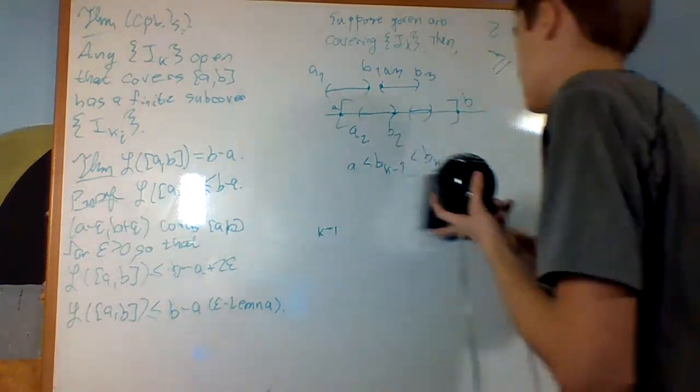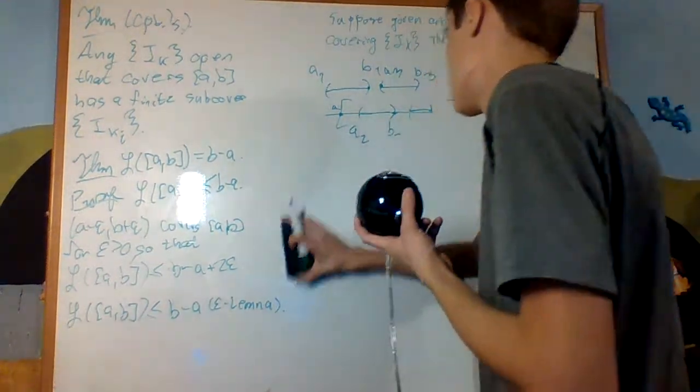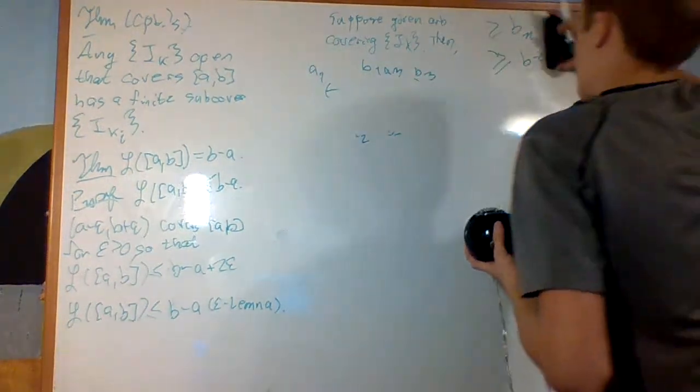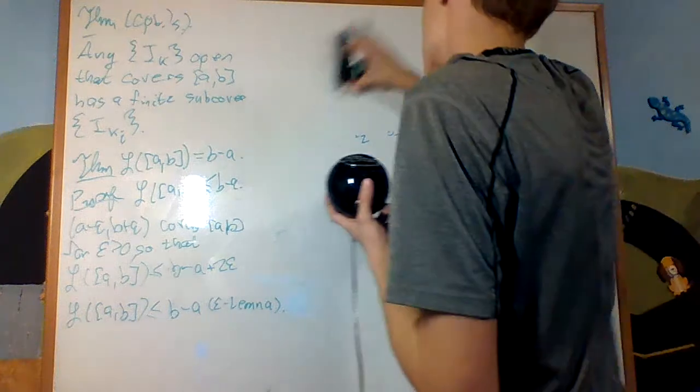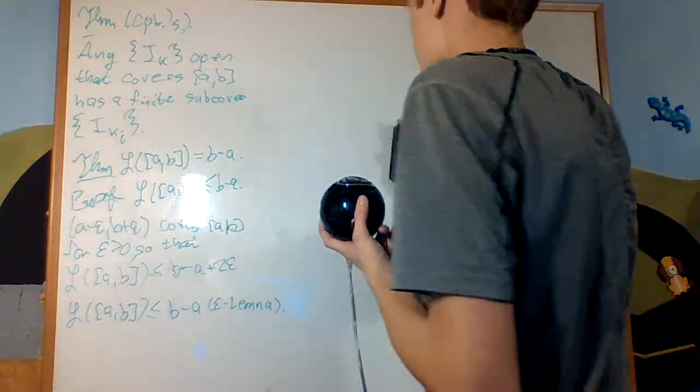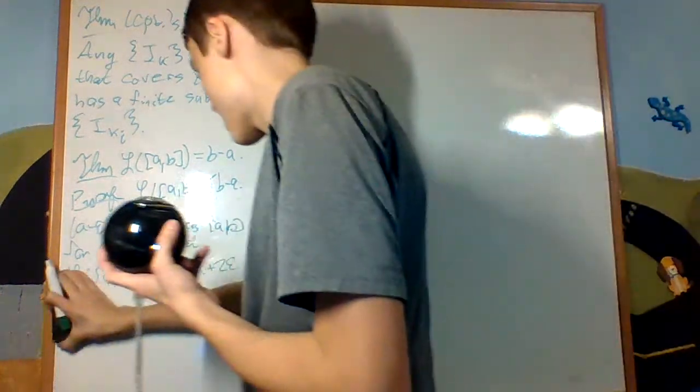Note that this is the Lebesgue outer measure. We have not yet proven that the interval [A, B] is in fact measurable, but I will cover a proof of that eventually.